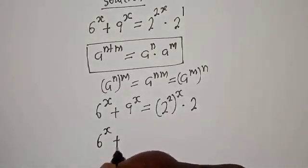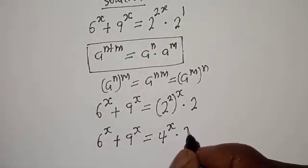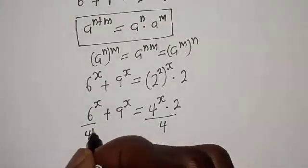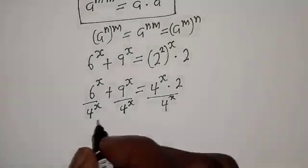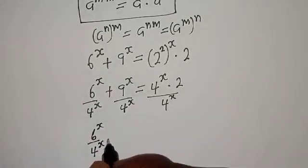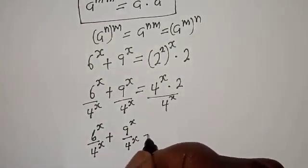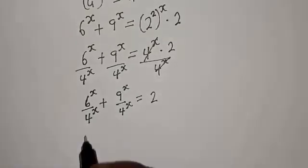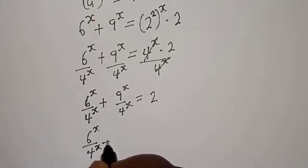So 6 raised to power s plus 9 raised to power s is equal to 4 raised to power s multiplied by 2. Let's divide both sides by 4 raised to power s. Dividing through by 4 raised to power s, the right side simplifies to 2.